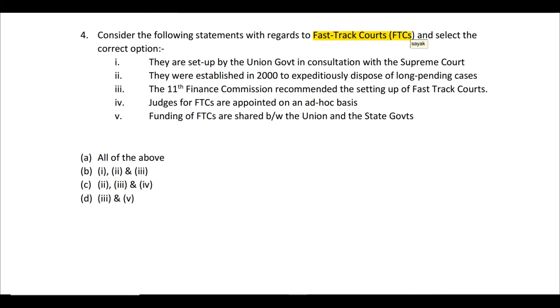The second statement — established in 2000 to expeditiously dispose of long-pending cases — is correct. The third statement — the 11th Finance Commission recommended setting up Fast Track Courts — is correct. The fourth statement — judges appointed on an ad hoc basis — is also correct. The fifth statement — funding shared between union and state governments — is incorrect, as the union government does not contribute any money; state governments fund Fast Track Courts from their own funds.